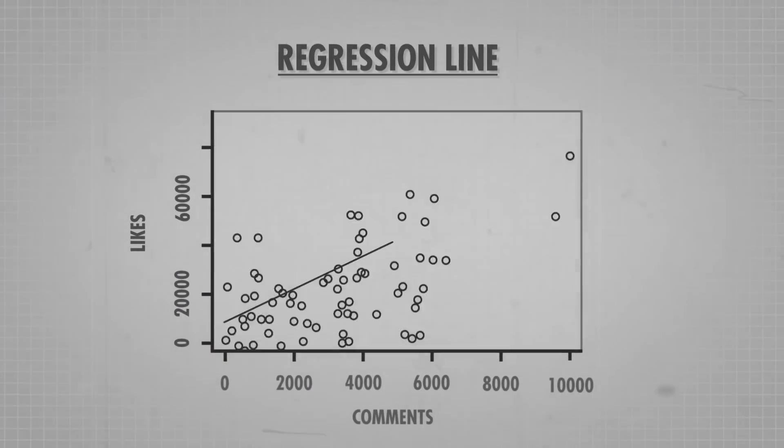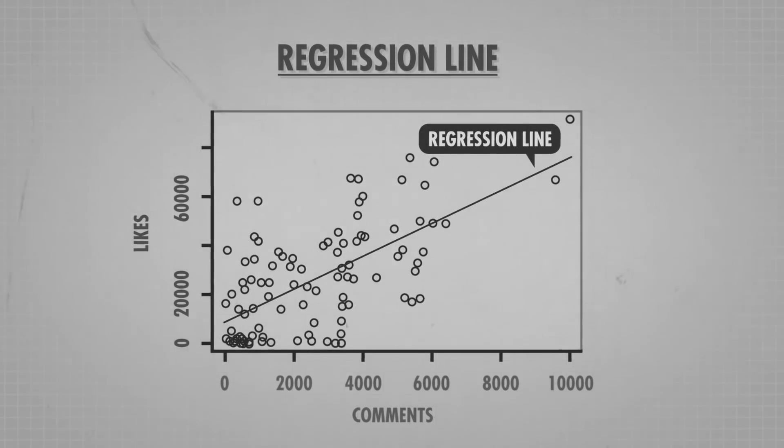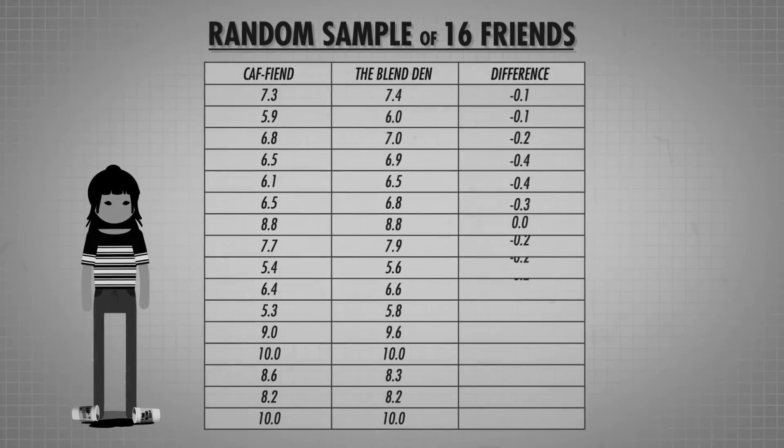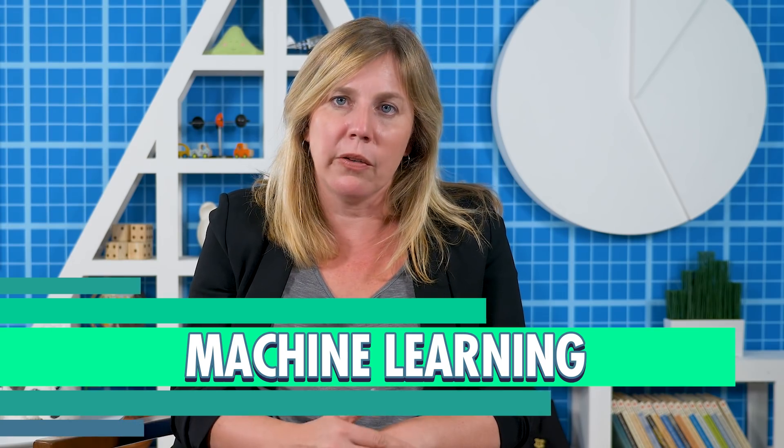Hi, I'm Adrienne Hill, and welcome back to Crash Course Statistics. We've covered a lot of statistical models, from the matched pairs t-test to linear regression. For the most part, we've used them to model data that we already have, so we can make inferences about it. But sometimes we want to predict future data. A model that predicts whether someone will default on their loan could be really helpful to a bank employee — they care about accurately predicting who will. Many types of machine learning do just that: build models to predict future outcomes.